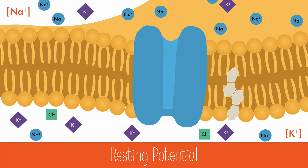The sodium and potassium channels are gated and closed. Because of the difference in number of sodium and potassium ions, as well as the presence of negative ions like chlorine, there's an overall negative internal charge of negative 70 millivolts.